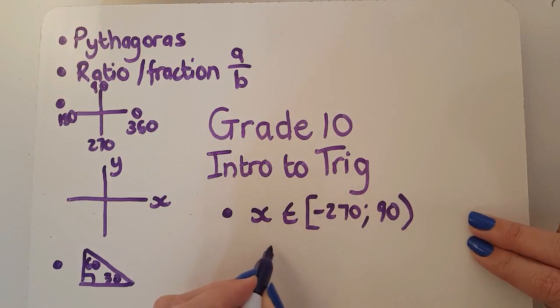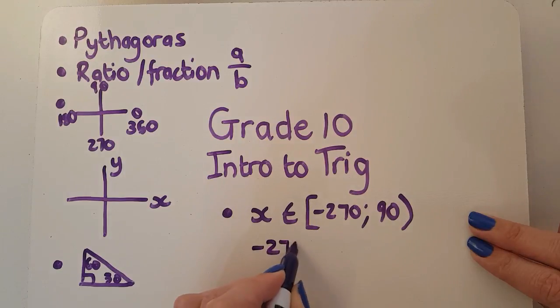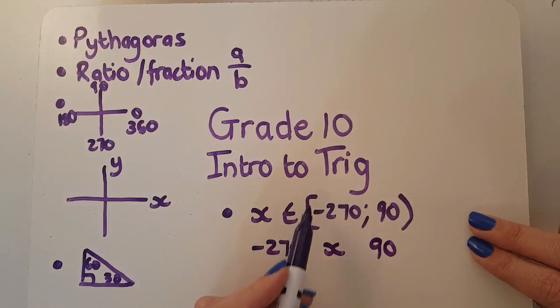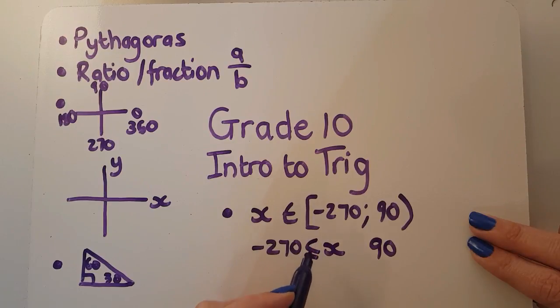So in the same way you could put negative 270 there and you could have 90 here and you could have x in the middle. So to show that it includes the 270 I'd have a less than or equal to and to show that it excludes the 90 I would just have it like that. Those concepts are going to be very important both of them actually.